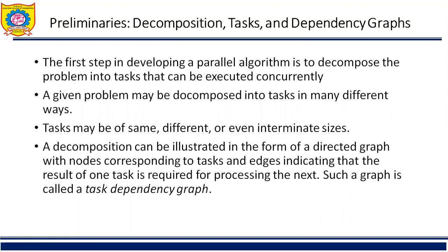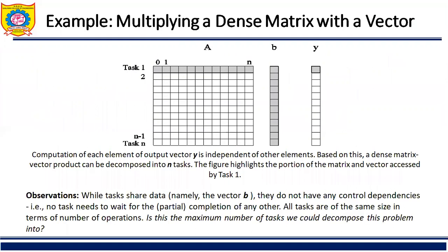The sub-tasks formed may be of same size, different size, or intermediate size. After decomposition, a task dependency graph is drawn — it is a directed graph where the nodes are the tasks and the edges represent how tasks communicate with other tasks. Now take one example: multiplying a dense matrix with a vector.